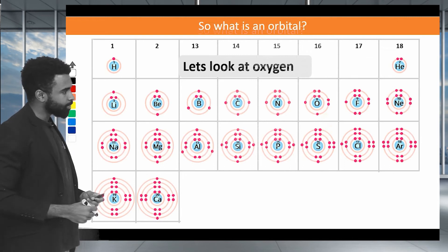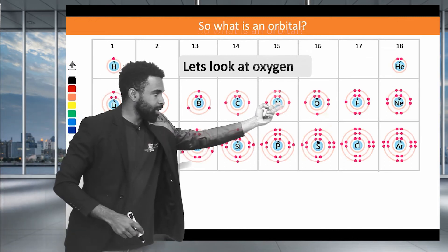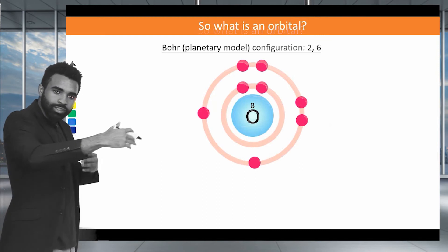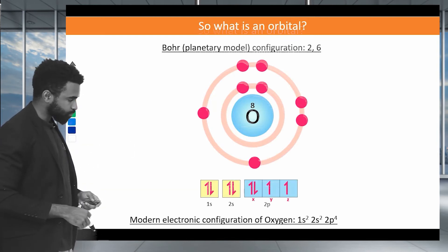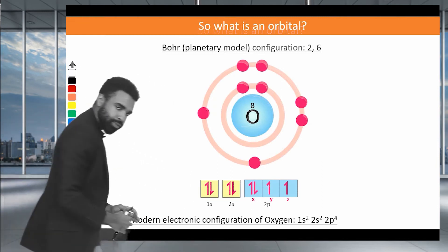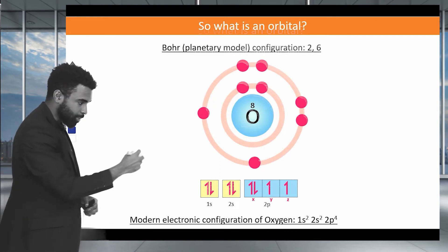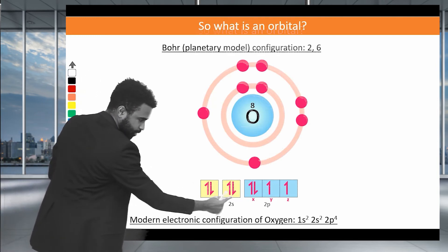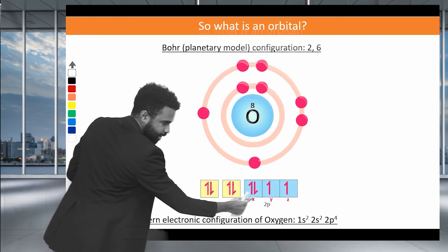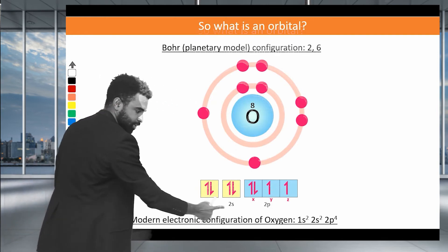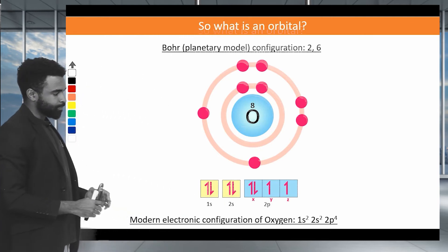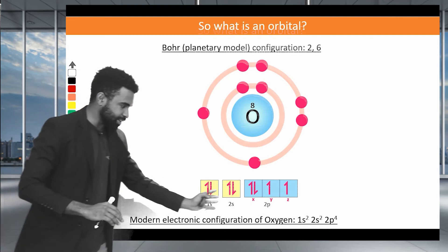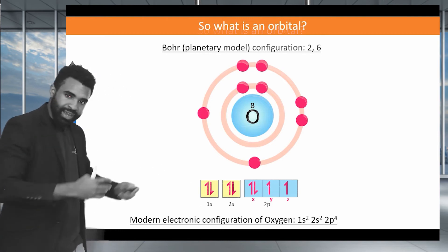Let's look at a more complicated atom — oxygen, with two electrons in its inner shell and six in its outer shell. In a future video I'll explain how we fill up these orbitals, but for now just observe: in the 1s and 2s orbitals we have two electrons each, and then we start filling the 2p orbitals.